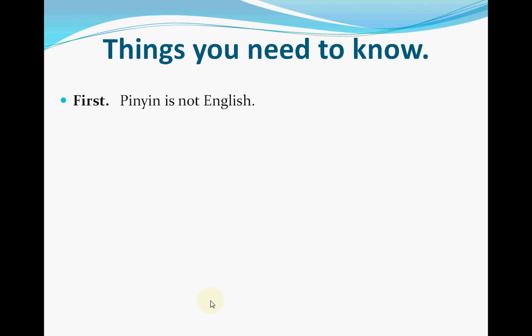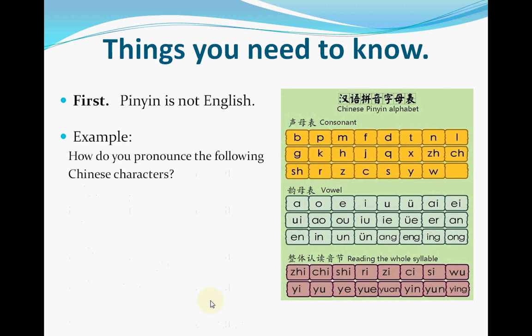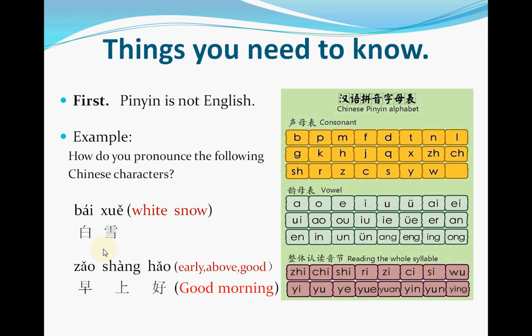Before we learn Pinyin, we have to know two things about it. The first one: Pinyin is not English. When you see the Chinese Pinyin table, you know every letter in the table, but they are totally different from how you read in English. For example, this is my name. You might use English letters to pronounce it, but this is how Pinyin works: B + ai = bai, X + ue = xue, Baixue. That is my name.